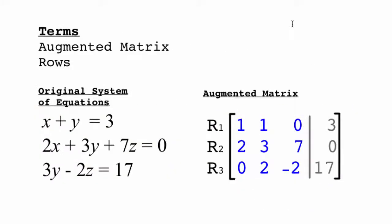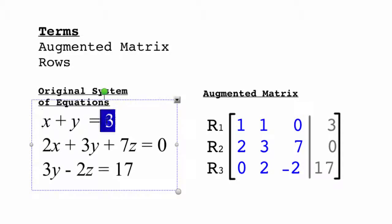First, a few terms that I'm going to use in this video: augmented matrix and rows. An augmented matrix is what you will create when you are given a system of three equations and three variables by using the coefficients of the variables. When you look at this first equation here, x plus y equals 3, when you have no number in front of the variable, you can assume that's a 1.